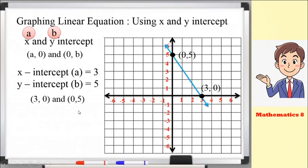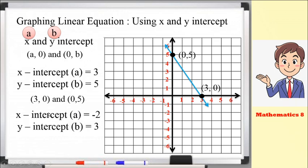Let's have another example. For the x-intercept, a equals negative 2, and the y-intercept b equals 3. Following the form (a, 0) and (0, b), we have the points (negative 2, 0) and (0, 3).